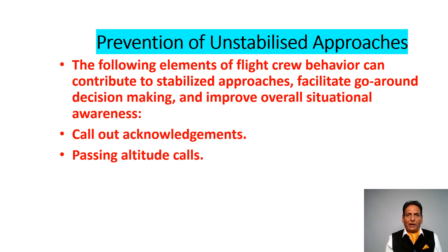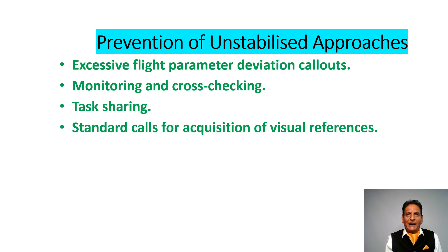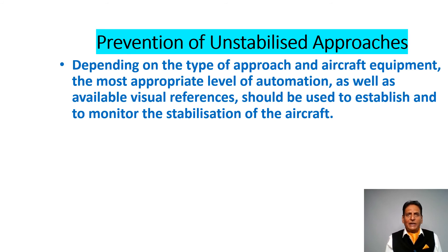The following elements of flight crew behavior can contribute to stabilized approaches, facilitate go-around decision-making, and improve overall situational awareness: callout acknowledgments must be made; altitude callouts when passing are important; excessive flight parameter deviation callouts are a must; monitoring and cross-checking by the pilot monitoring; task sharing and standard calls for acquisition of visual references. Depending on the type of approach and aircraft equipment, the most appropriate level of automation as well as available visual references should be used to stabilize and monitor the stabilization of the aircraft.